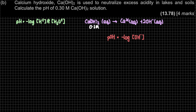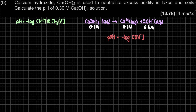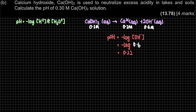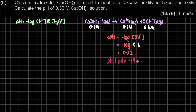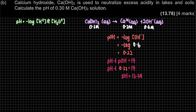Since it's a strong base that dissociates fully, we can find [OH⁻] directly using the mole ratio. If [Ca(OH)2] = 0.3 M, then [Ca²⁺] = 0.3 M, but [OH⁻] = 0.6 M because the coefficient is 2. Now we can find pOH = −log[OH⁻] = −log(0.6) = 0.22. The question asks for pH, not pOH, so we use: pH + pOH = 14. Therefore pH = 14 − 0.22 = 13.78.